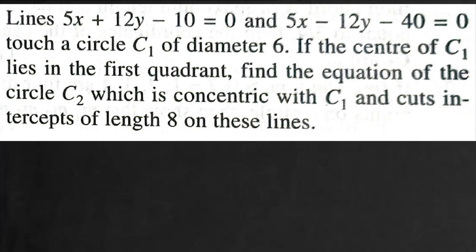Lines 5x plus 12y minus 10 equals 0 and 5x minus 12y minus 40 equals 0 touch a circle C1 of diameter 6. If the center of C1 lies in the first quadrant, find the equation of circle C2 which is concentric with C1 and cuts an intercept of length 8 on these lines.